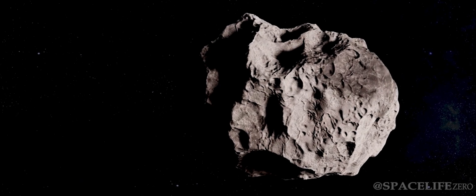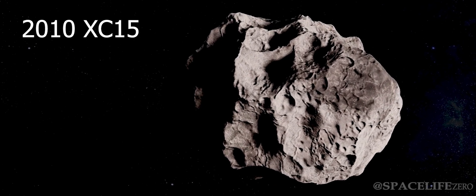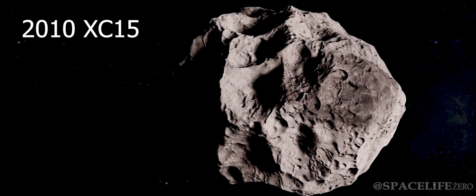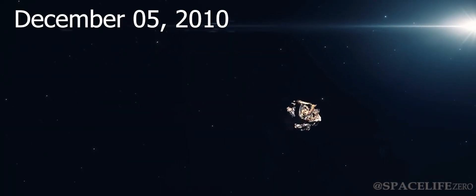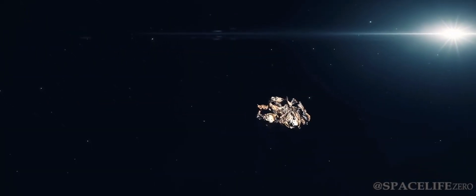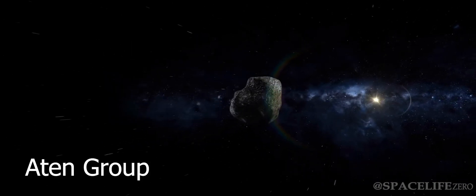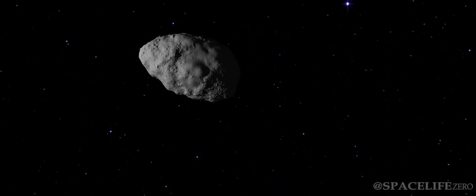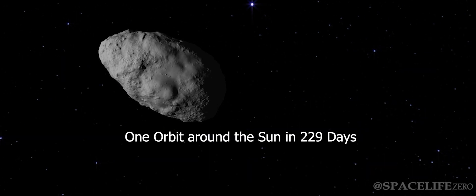This massive asteroid is designated as Asteroid 2010 XC15. It was discovered on December 5, 2010, and it belongs to the Aden Group. It makes one orbit around the Sun in 229 days.